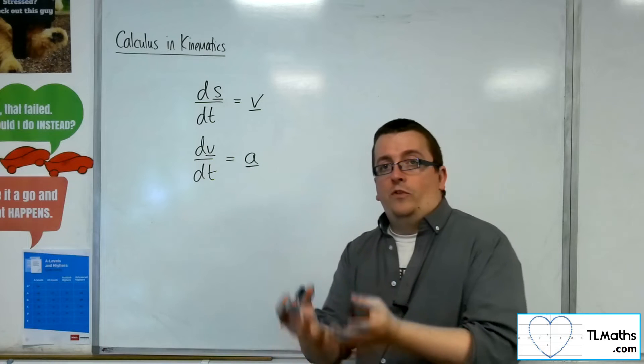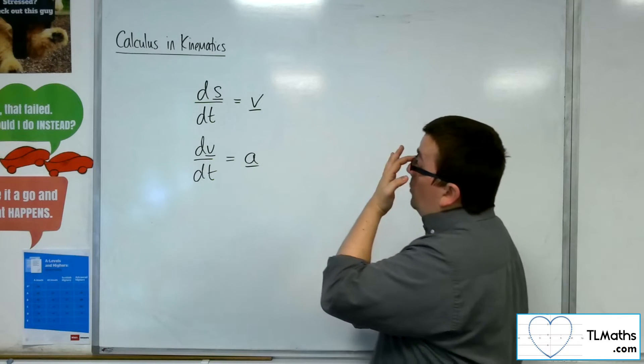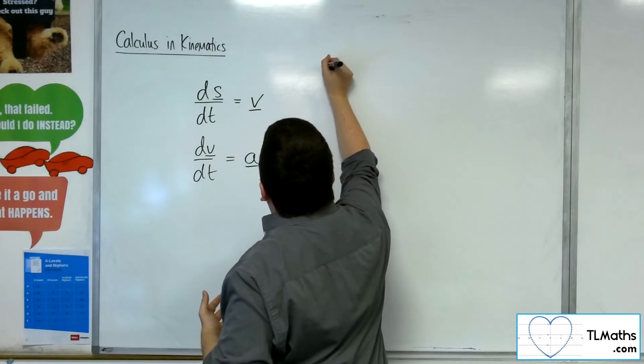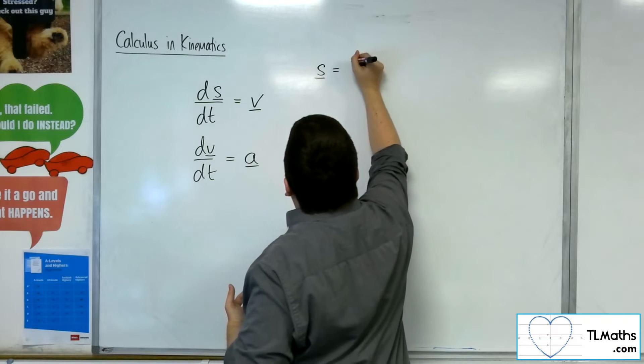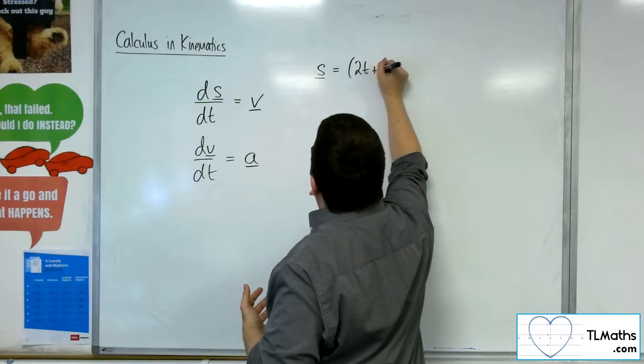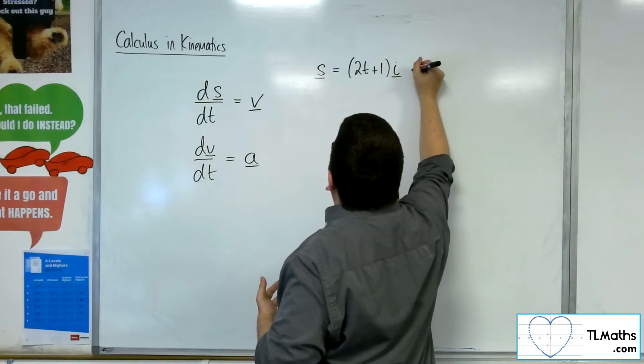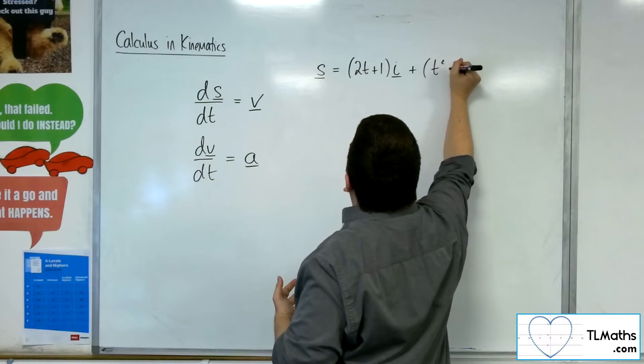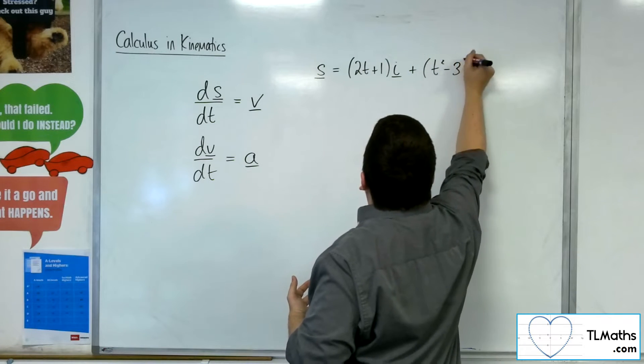For example, if the displacement was something like (2t + 1)i + (t² - 3)j, then you would be able to work out the velocity by differentiating what's in front of the i with respect to t.